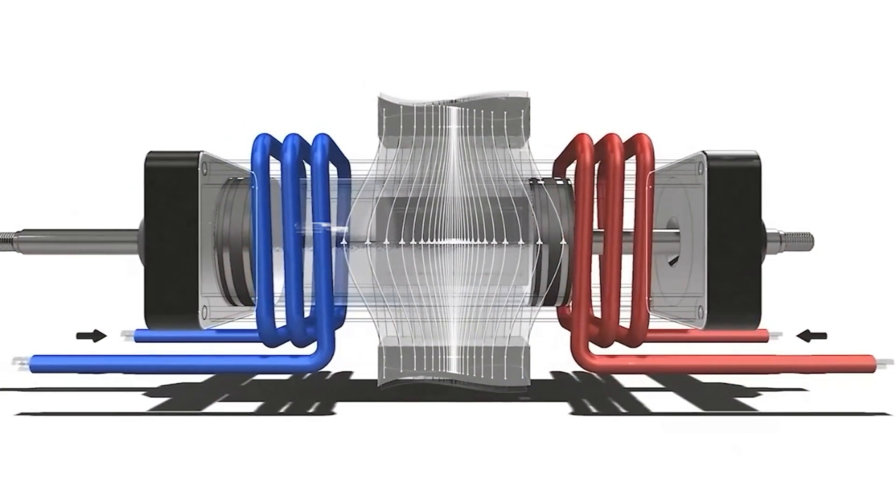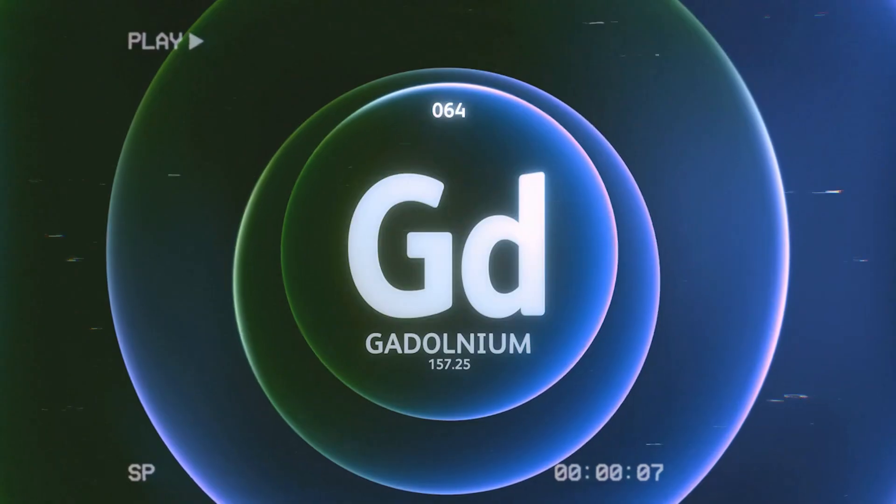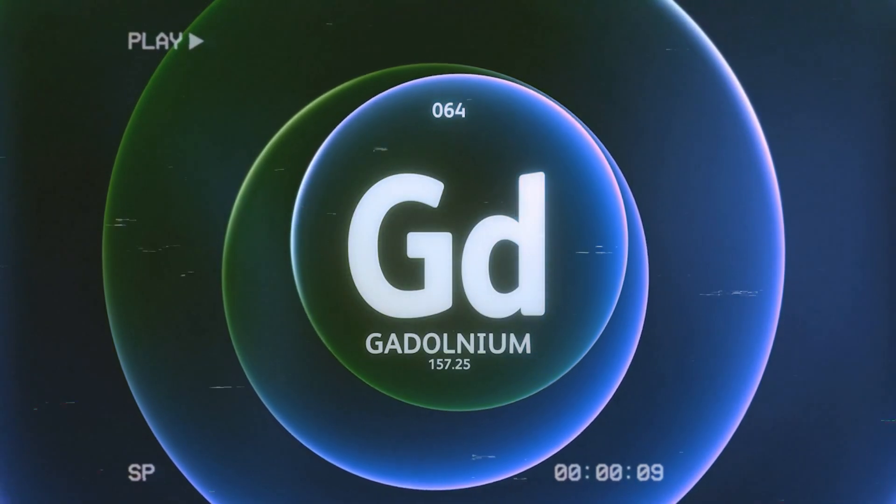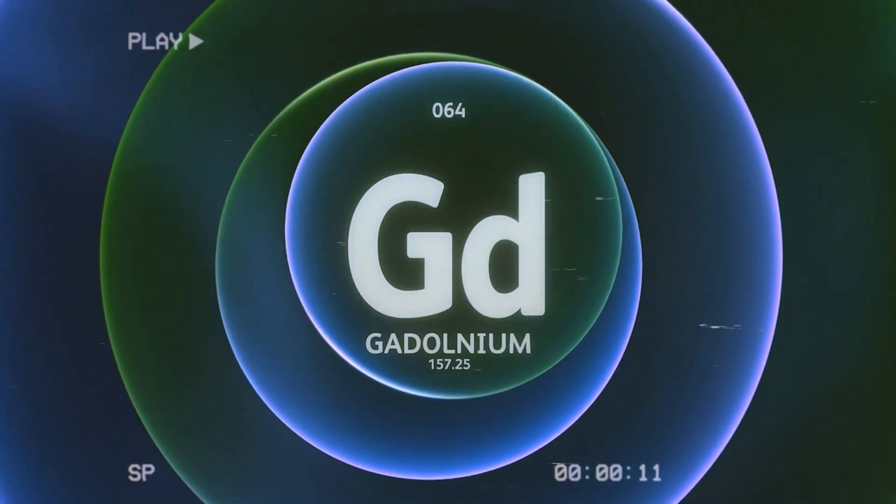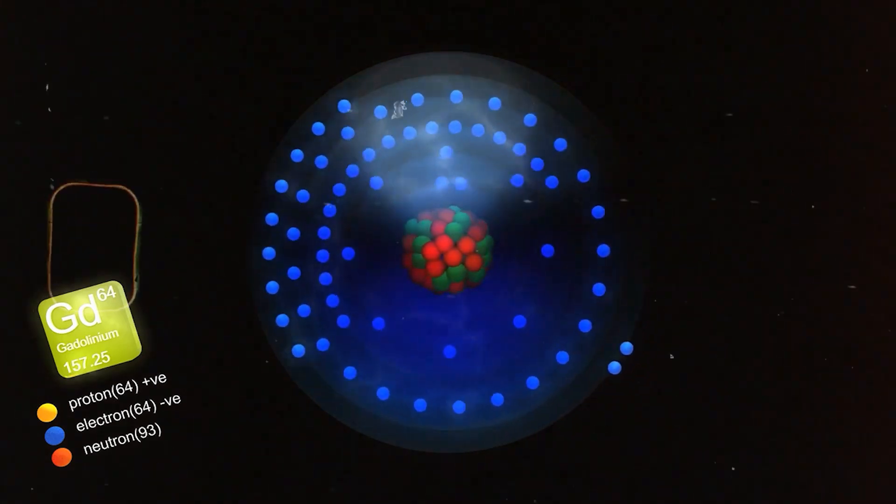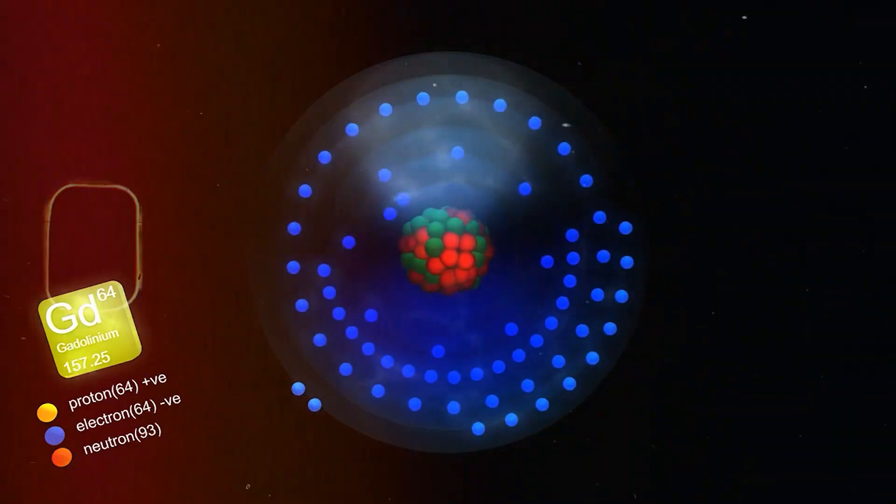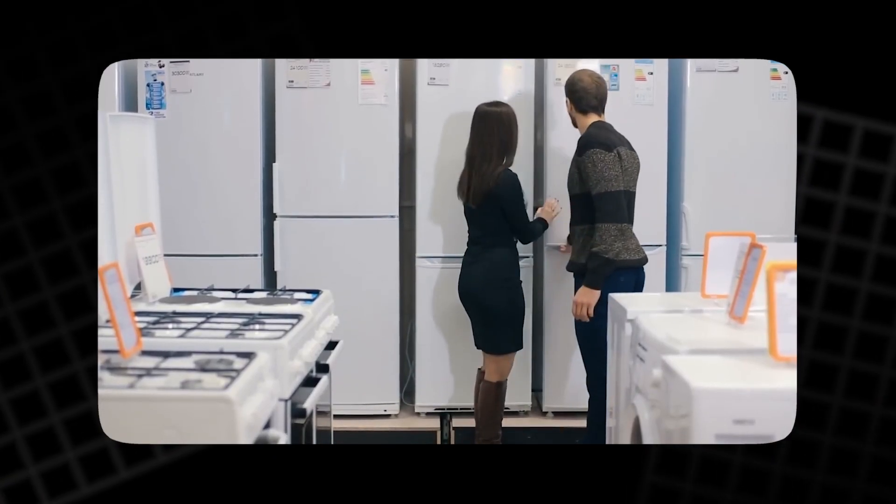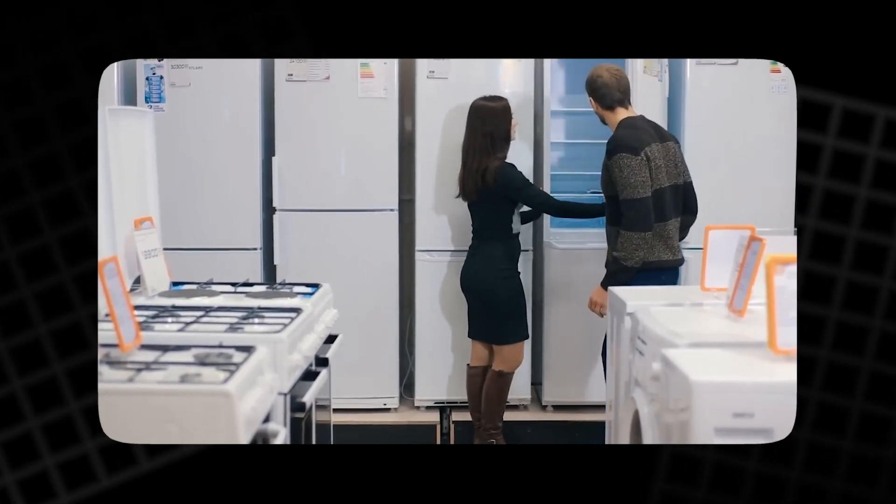One of the key materials used in magnetocaloric devices is gadolinium, a rare earth metal known for its ability to respond to magnetic fields. Gadolinium has long been used in nuclear reactors and medical imaging, but now it is also being investigated for its potential in everyday cooling applications.